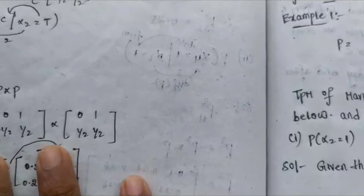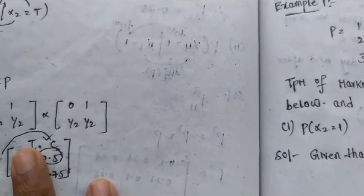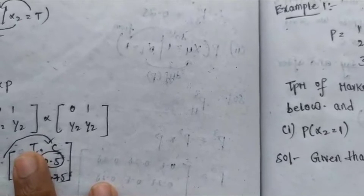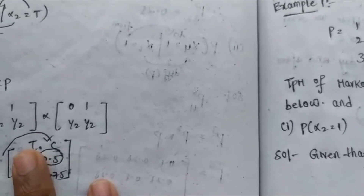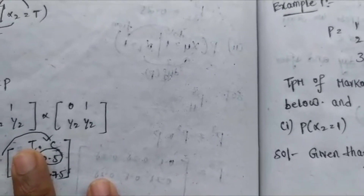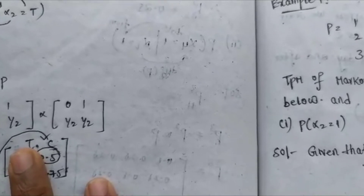Hello guys, welcome to my YouTube channel. In the previous video we discussed the first concept of Unit 3, that is the transition probability matrix. In this video we will discuss the second concept of Unit 3, that is the Type 2 model called n-step transition.